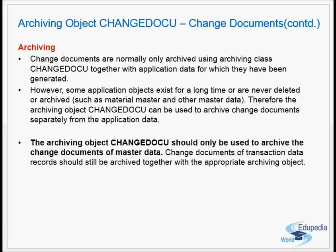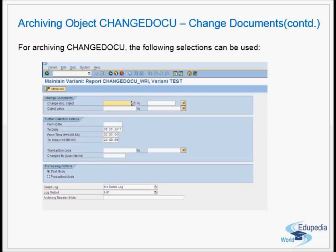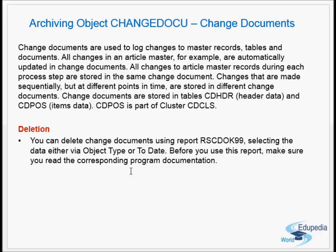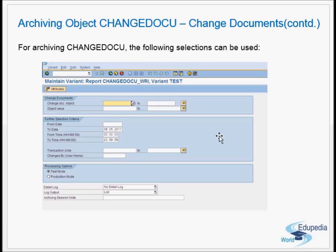The archiving object is CHANGE_DOCU (C-H-A-N-G-E D-O-C-U). The initial screen for report RSCDOK99 allows you to enter the change document object name, value, and date as selection criteria to run the deletion or archiving.